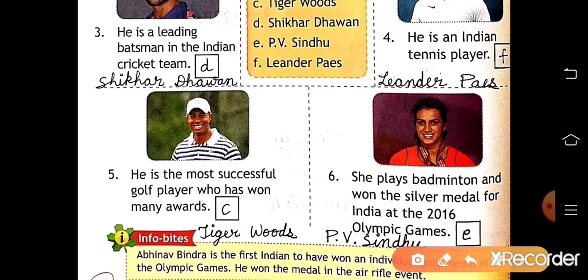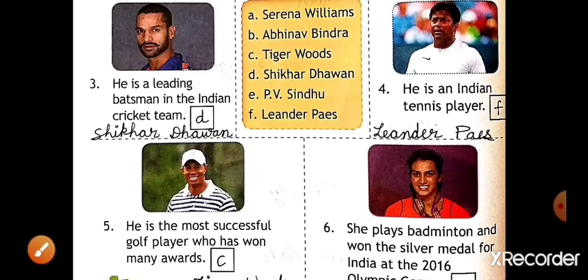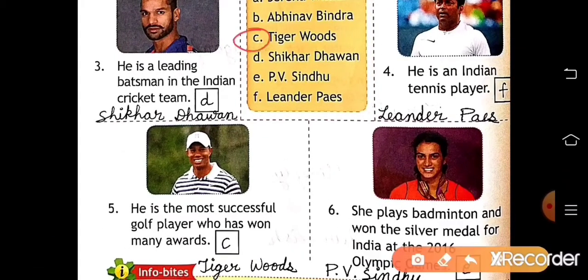Number five: he is the most successful golf player who has won many awards. He is Tiger Woods. His name is Tiger Woods and he is at C number, so write C here.